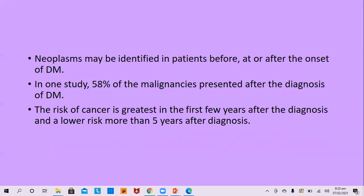Neoplasm may be identified in patients before, at, or after the onset of dermatomyositis. In one study, 58% of malignancies presented after the diagnosis of dermatomyositis. The risk of cancer is greatest in the first few years after diagnosis, with lower risk more than five years after diagnosis.